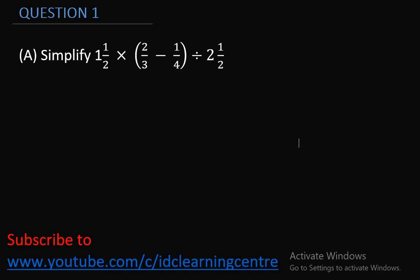This question says, simplify. We have 1 and 1/2 times a bracket, 2/3 minus 1/4, close bracket, divided by 2 and 1/2. The first thing we must do is to respect the BODMAS rule. We must obey BODMAS whenever we are solving any fraction problem. So we are going to solve for the terms in the bracket first.